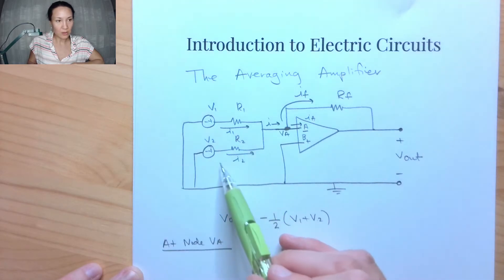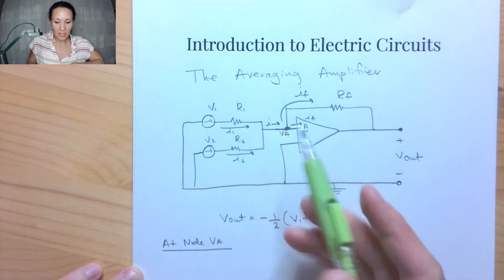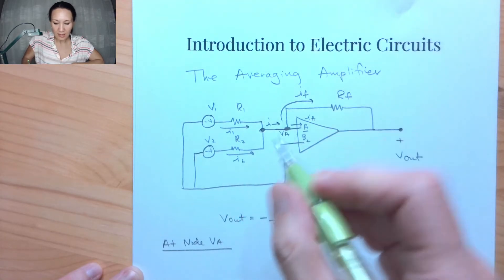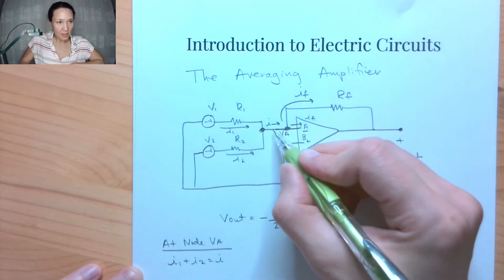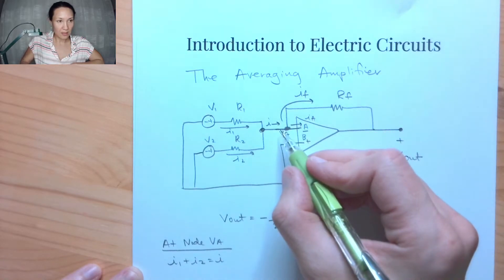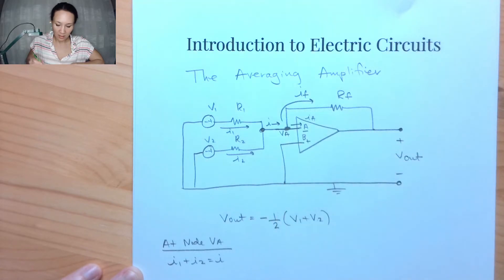So what do I have here? I've got this I1 current, the I2 current, meeting here at this node and combining into I. So let me write that down. I have I1 plus I2 is equal to I. And then at this VA node, I have IA coming in, I have IA coming out, and IF coming out.